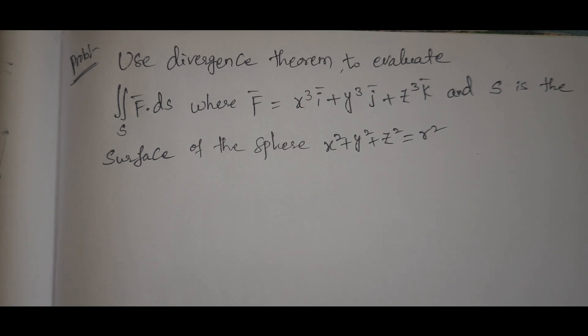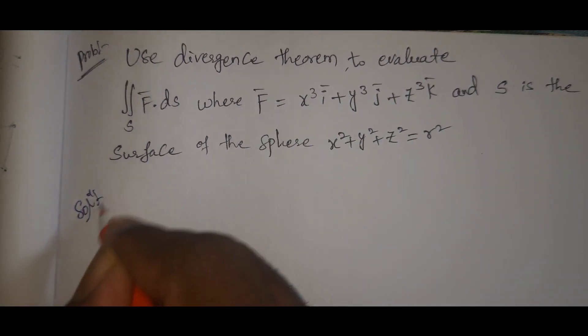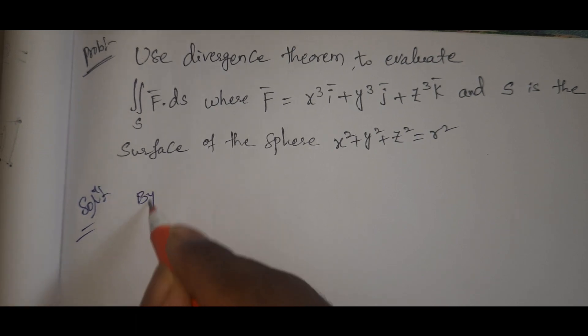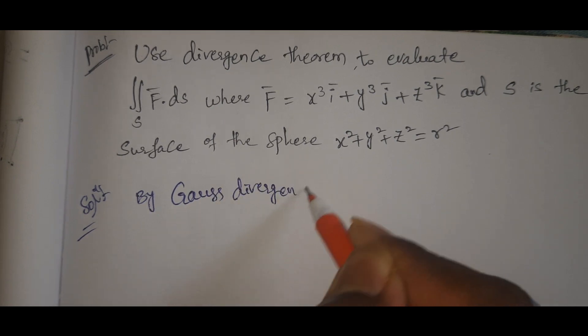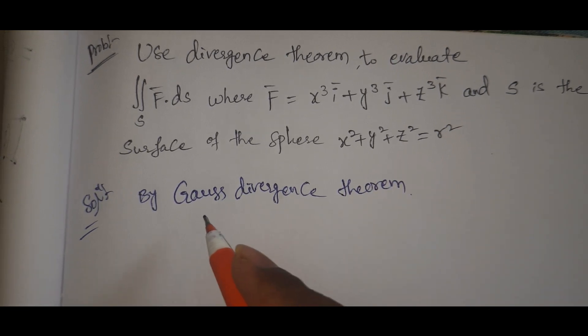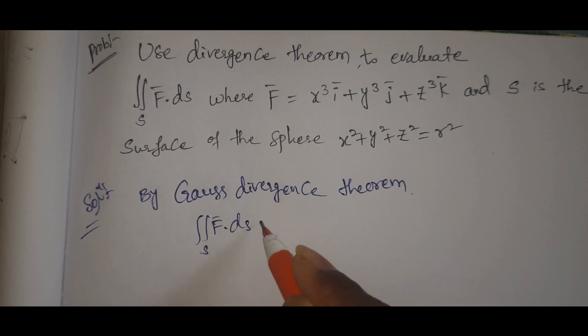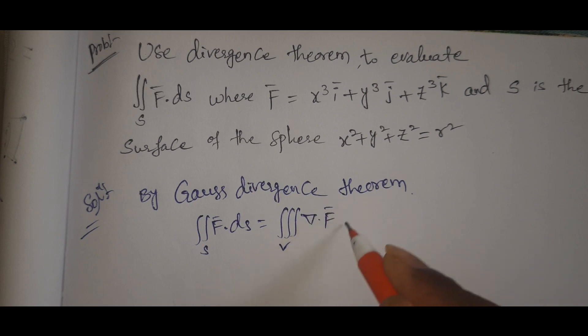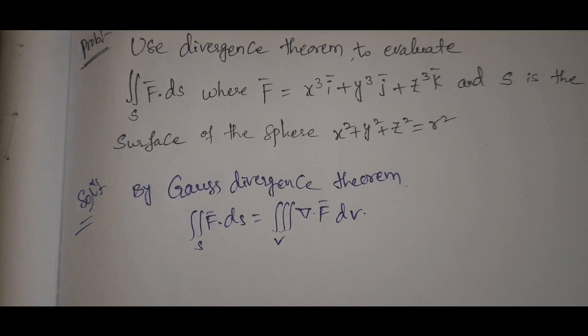Okay, see the solution. First, by Gauss divergence theorem, integral S F dot dS equals triple integral V del dot F dV. We need to evaluate the right hand side.